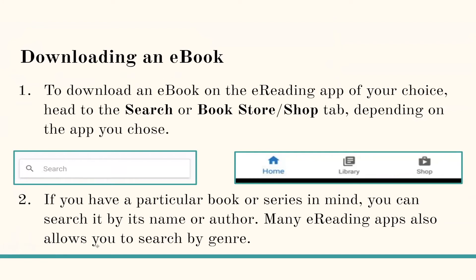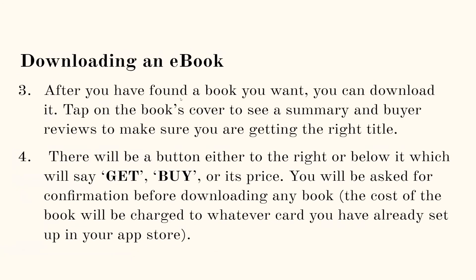To download an ebook on the e-reading app of your choice, head to the search or bookstore tab, depending on the app you choose. This will likely be in large text and easy to find on the home page. If you have a particular book in mind, you can search by name or author, and many e-reading apps also allow you to search by genre. After finding a book you want, tap on the cover to see a summary and buyer reviews. There will be a button to get or buy it, and you will be asked for confirmation before downloading. The cost will be charged to whatever card you have set up in your app store.